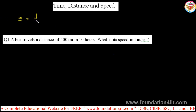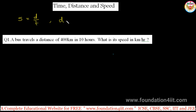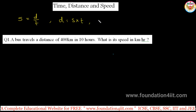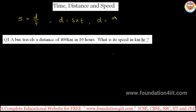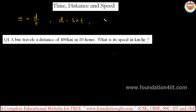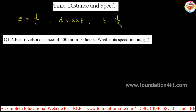Speed is equal to distance divided by time, which means distance is equal to speed multiplied by time. From the first formula you can derive the others. Time is equal to distance divided by speed.